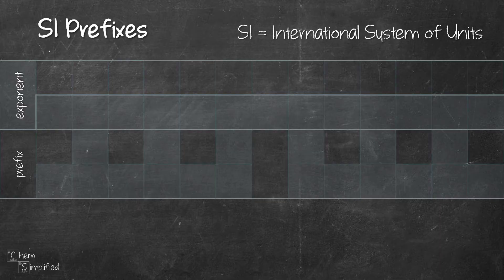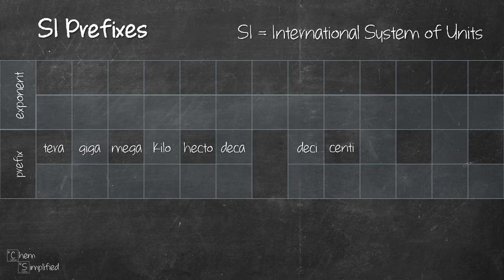So what are the 12 prefixes we're going to remember? They are tera, giga, mega, kilo, hecto, deca, deci, centi, milli, micro, nano, and pico.